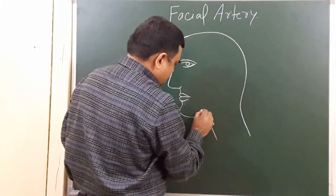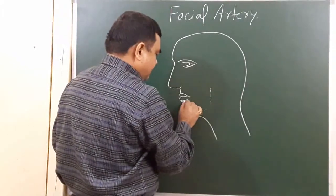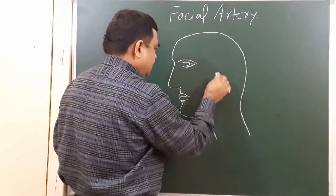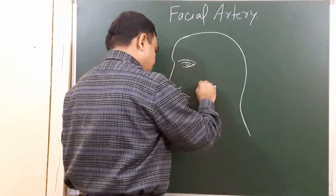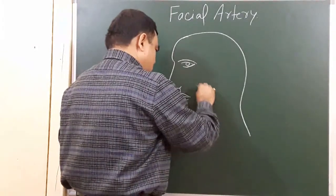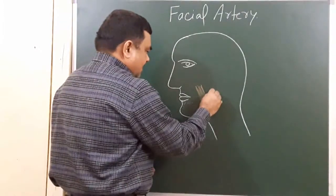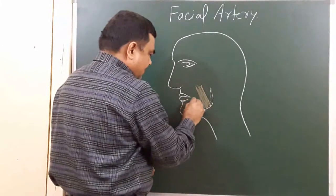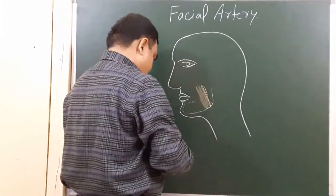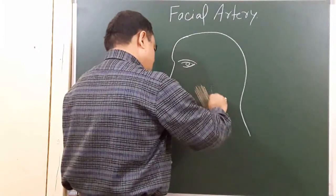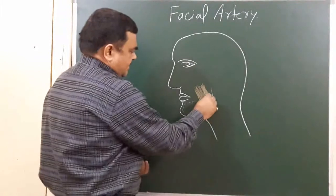This is the position of the mandible. Here is the position of the masseter — this is the position of the masseteric muscle, which attaches to the mandible. This line represents the mandible, and this is the masseter.